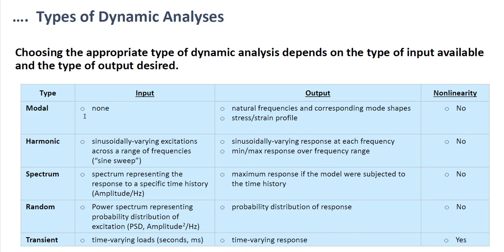For modal analysis, the input requirement is boundary conditions only — no loads are applied. The output will be natural frequencies and corresponding mode shapes, stress, and strain profiles. This is a linear analysis. For harmonic analysis, the input is sinusoidally varying excitation across a range of frequencies. The output will be sinusoidally varying response at each frequency — minimum and maximum response over the frequency range. Harmonic analysis is also linear.